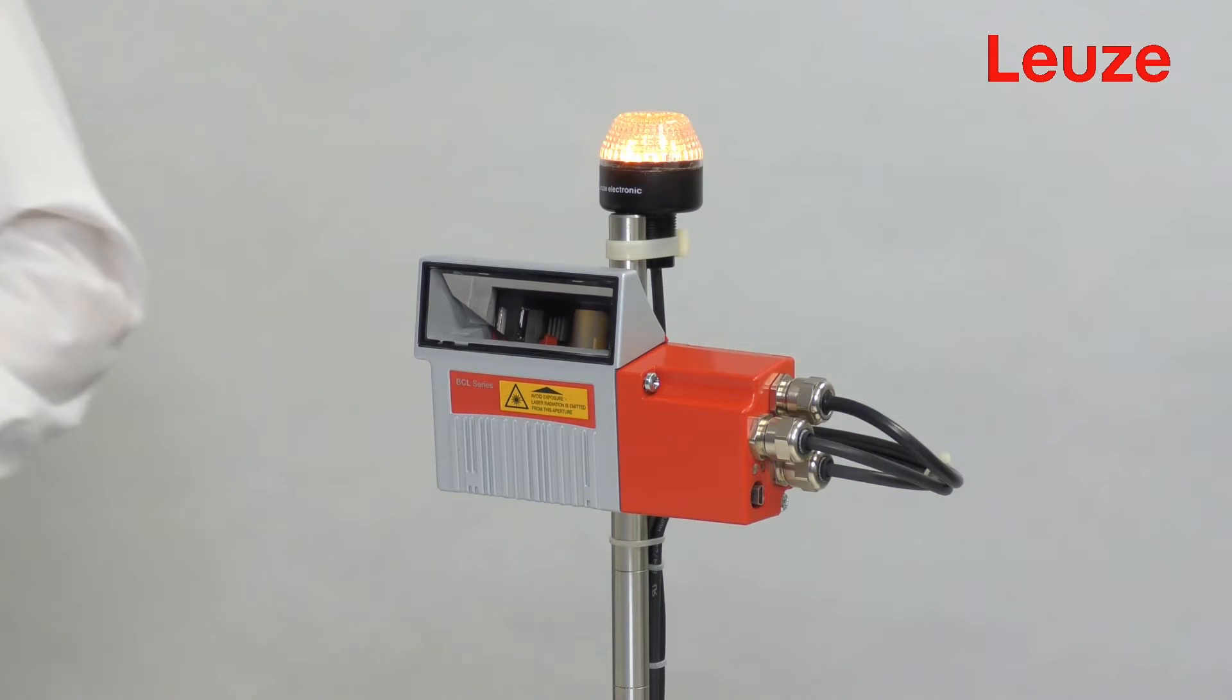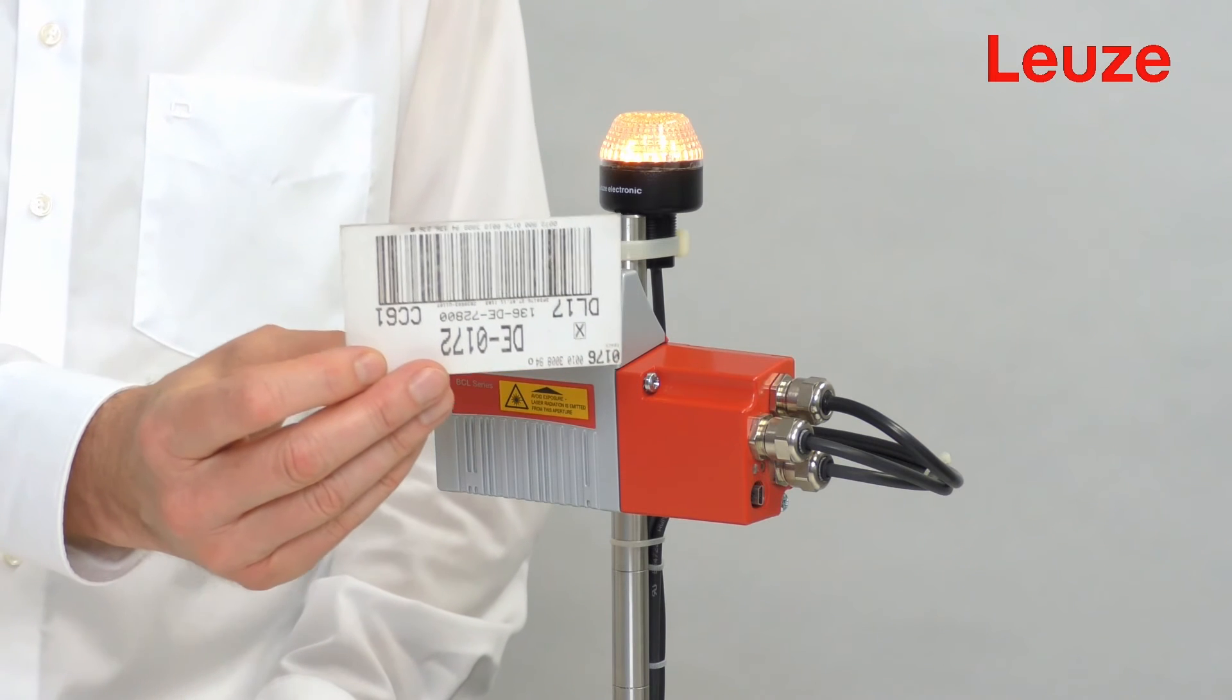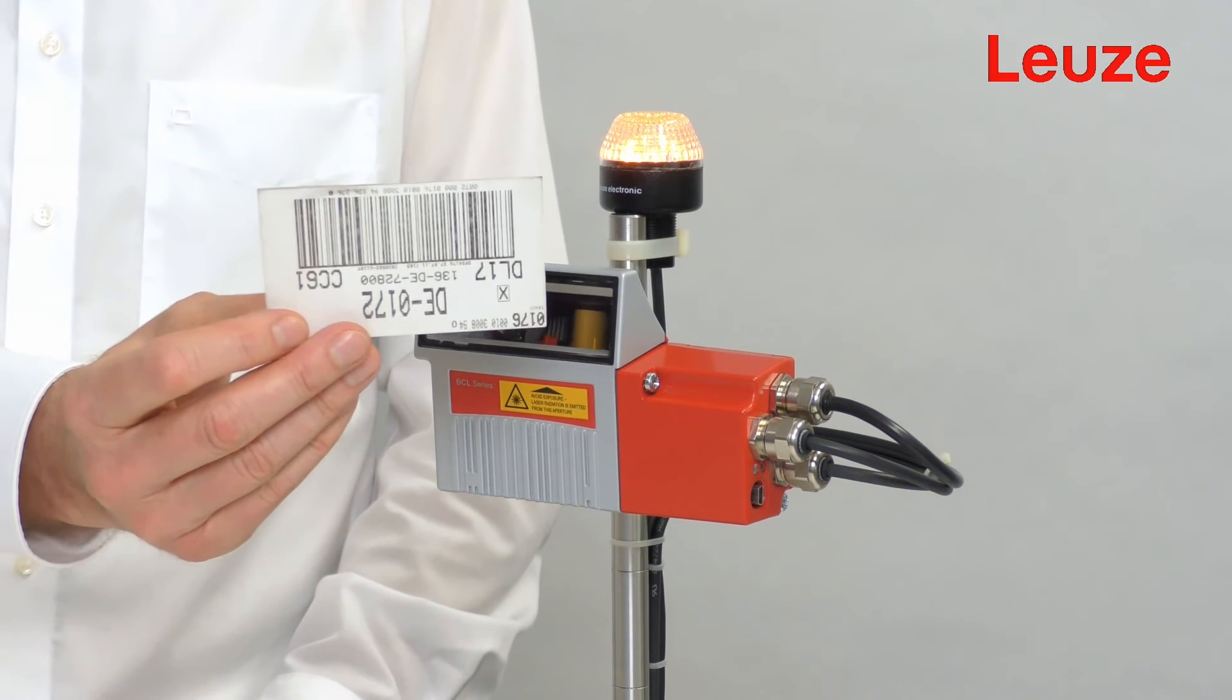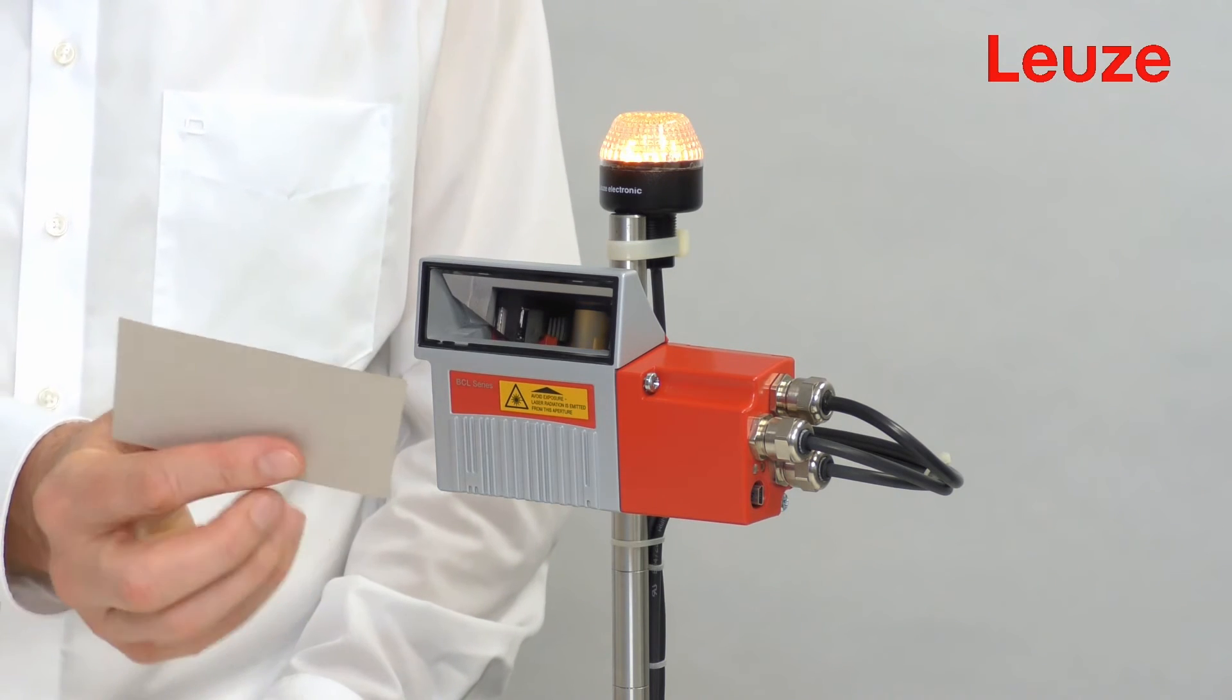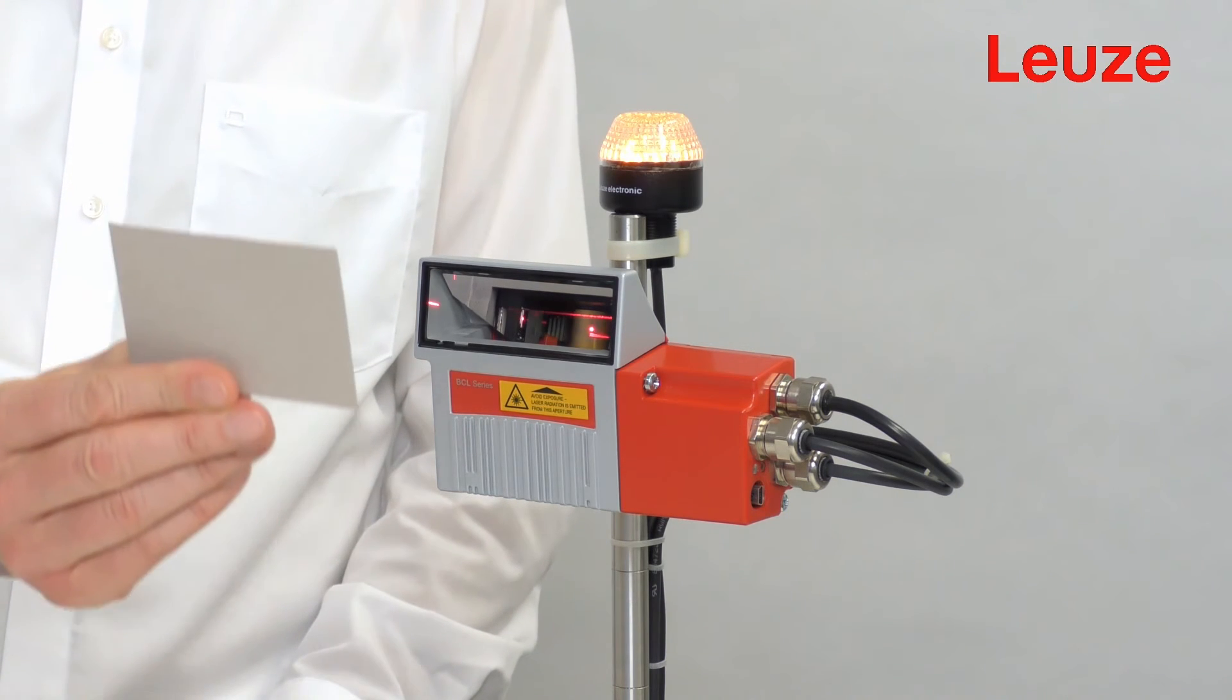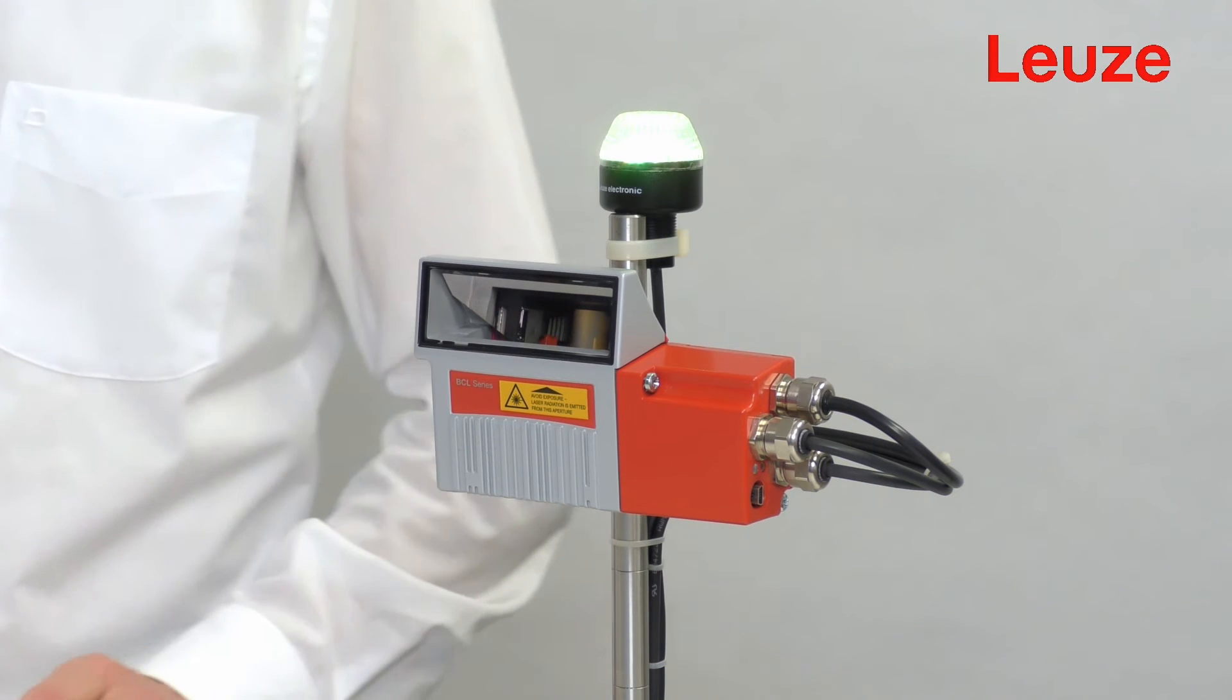Here we have another such case. This code is also not up to standard. The code is very poorly printed and the bars have very little contrast. We pass it through the reading field. And here, too, it is correctly decoded.